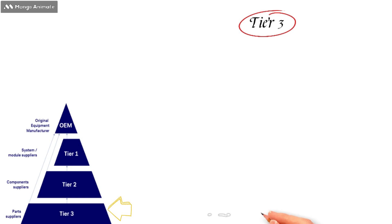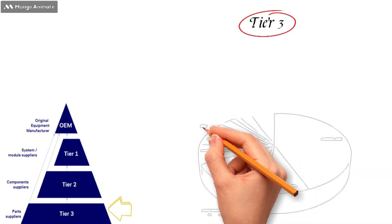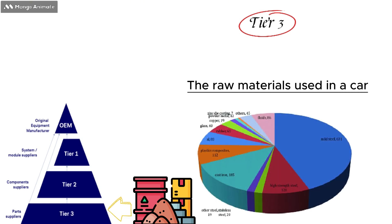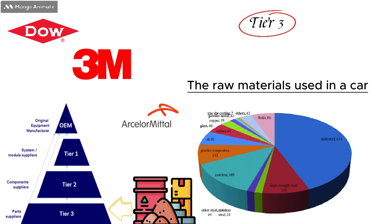Tier 3 suppliers provide raw materials like metal, plastic or electronic components to Tier 1 suppliers such as DAW, 3M and ArcelorMittal.